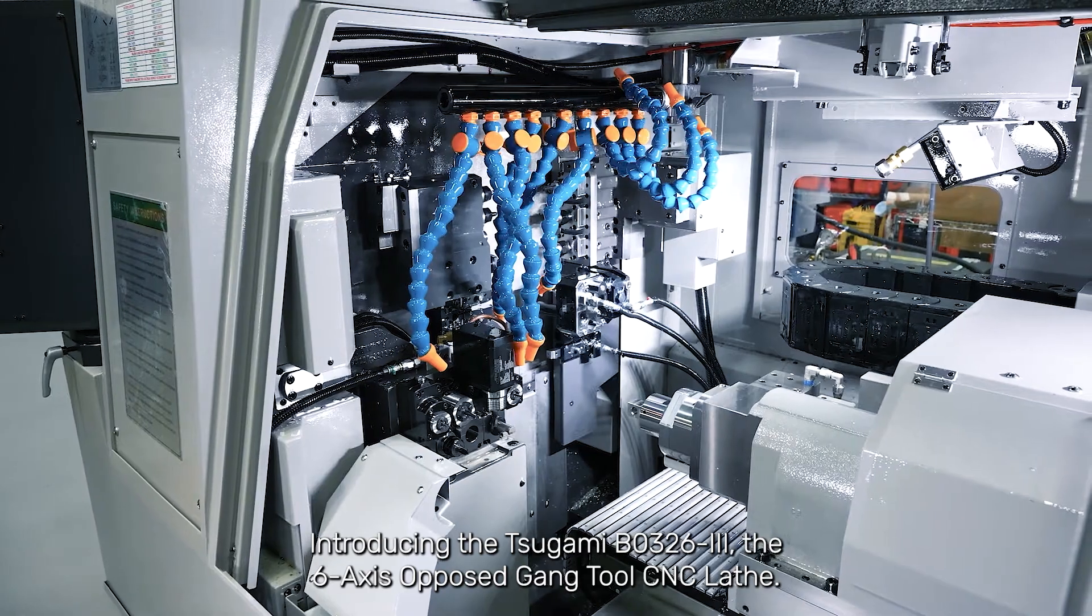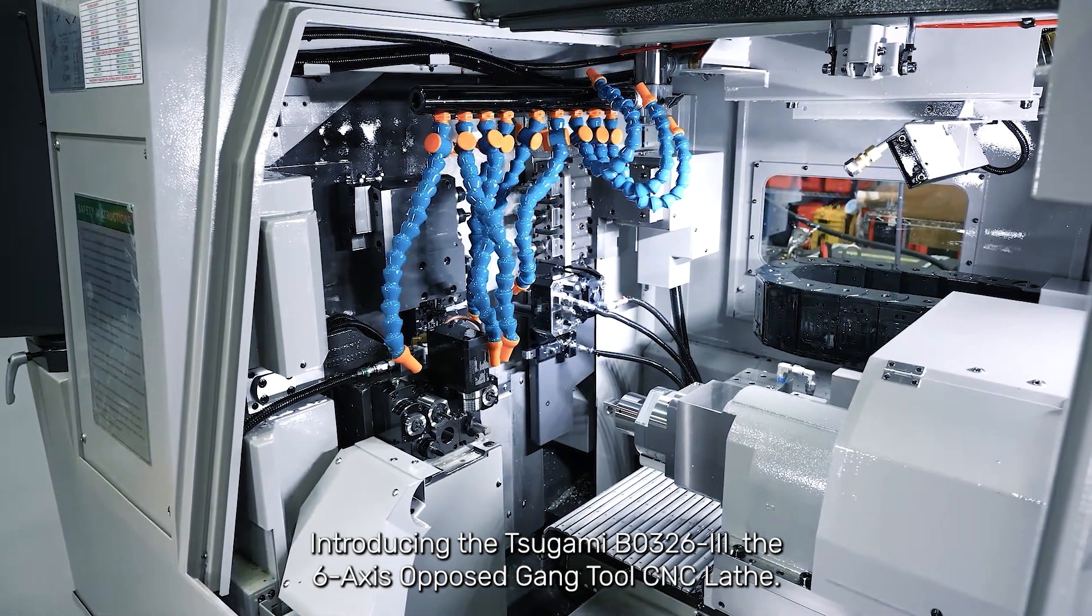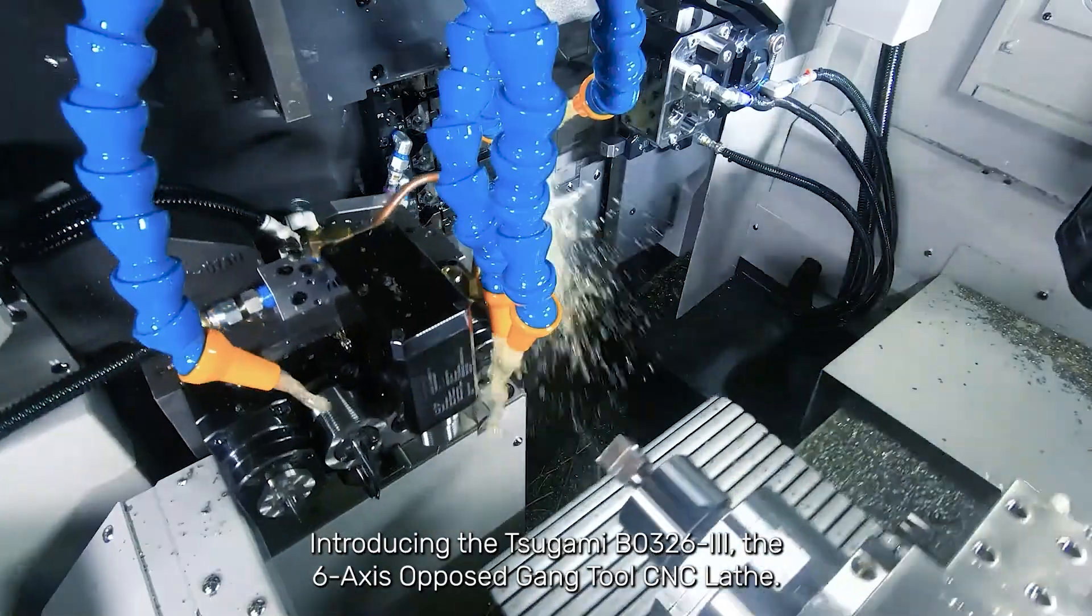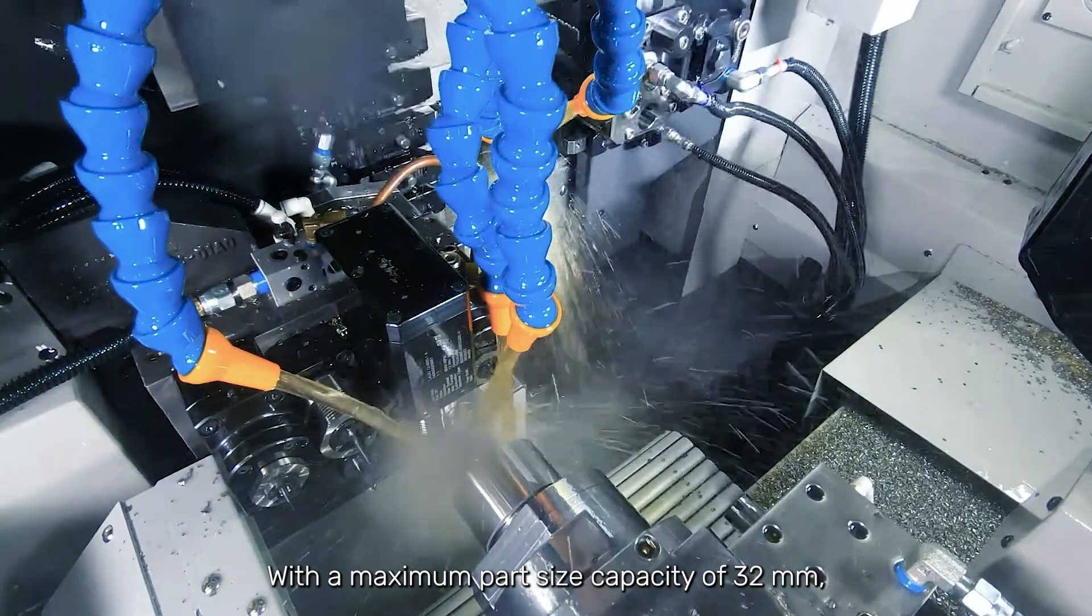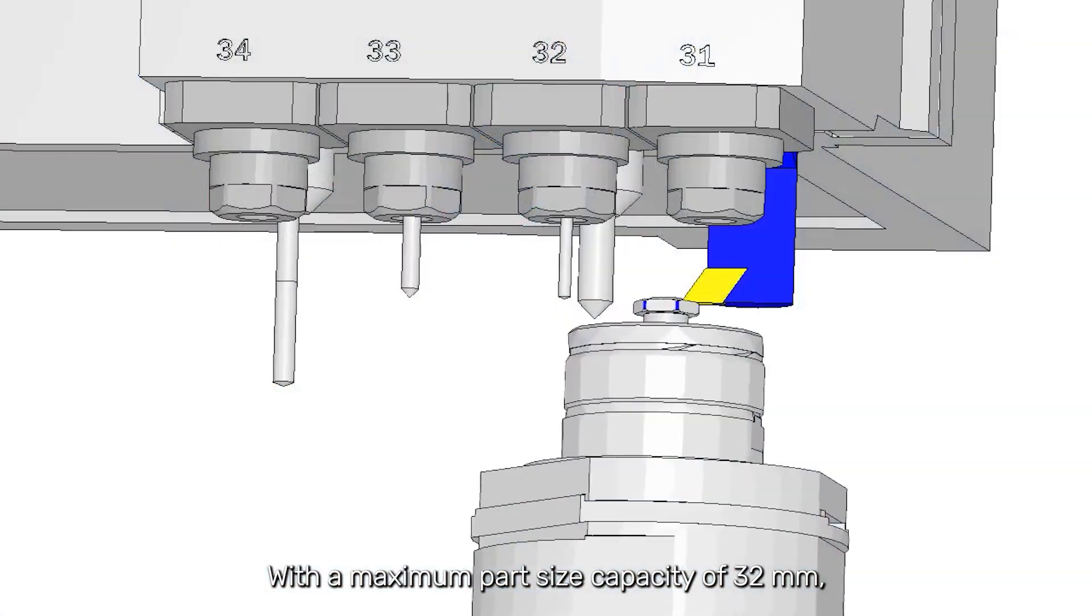Introducing the Tsugami BO326, a 6-axis opposed gang tool CNC lathe. With a maximum part size capacity of 32 millimeters, this machine is built for precision small part manufacturing.